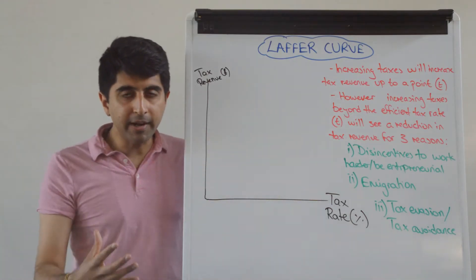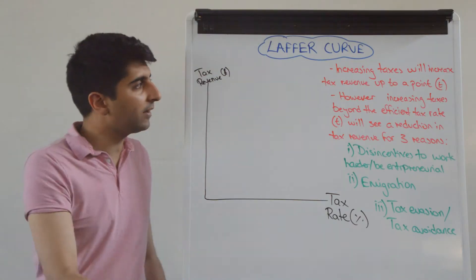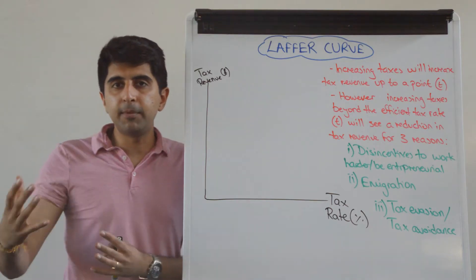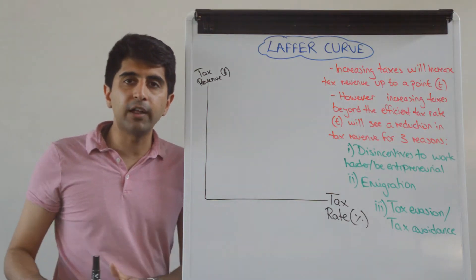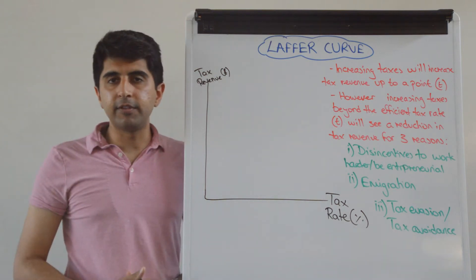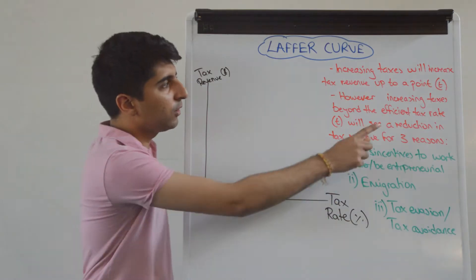Arthur Laffer, an American economist, said that yeah by increasing taxes like income tax, tax revenue collected can increase and that extra tax revenue can then be used to help redistribute income and wealth, can be used to help fund essential public services in the economy, to do all these great things, but only up until a point.